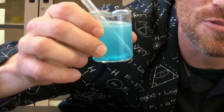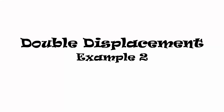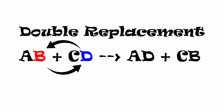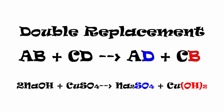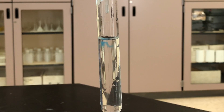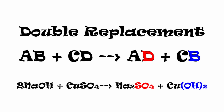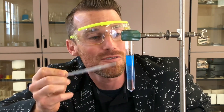Now I have sodium hydroxide solution and copper sulfate solution — last double displacement. The copper in our solution is going to replace the sodium and they're going to switch partners. The copper and the sodium switch partners — now we have this awesome copper precipitate of copper(II) hydroxide, and then we have aqueous sodium sulfate still floating around.